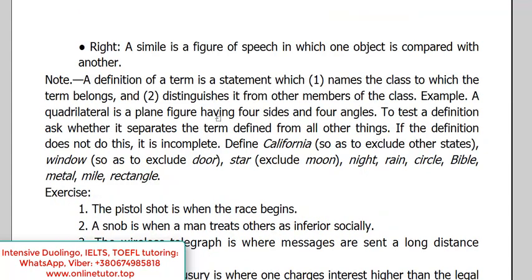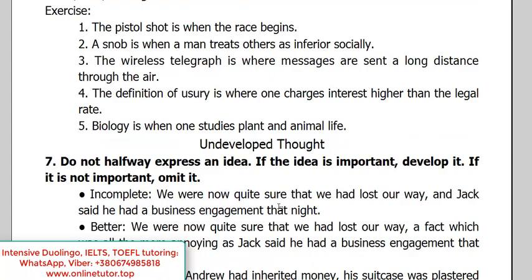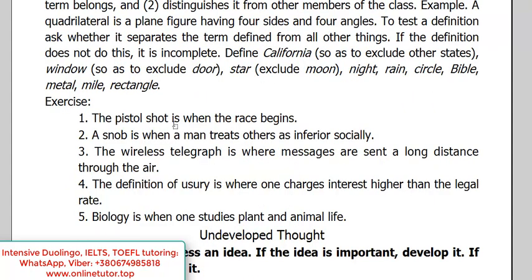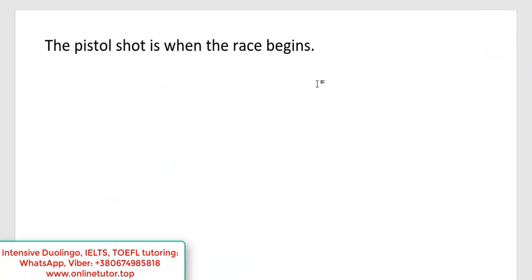There is a lot of theoretical material here, so feel free to pause the video and read it. For some of you it may be difficult to process, so let's look at some practical examples and then correct them. For example, this is wrong: 'The pistol shot is when the race begins.' How can we modify it to make it correct? Try to think of your own variant.